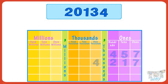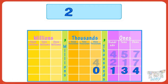Now let's read a five-digit number. Write it below the place value chart starting with the ones place: four below ones, three below tens, one below hundreds, zero below thousands, and two below ten thousands. Now let's read the number.